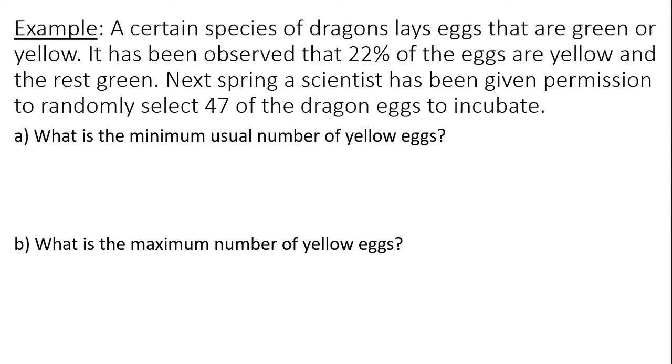This is a binomial experiment because he has 47 trials. And since we're talking about yellow eggs, the probability of a success of choosing a yellow egg each trial would be 22%. So let's write our parameters down over here on the right hand side.